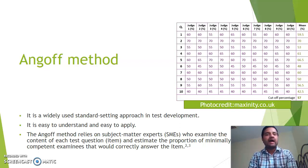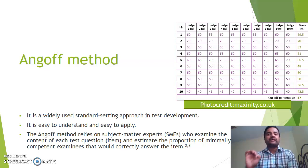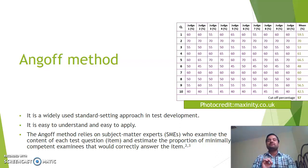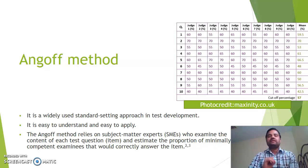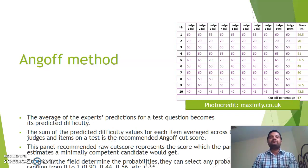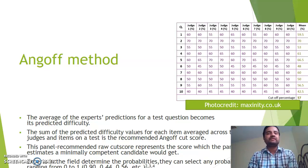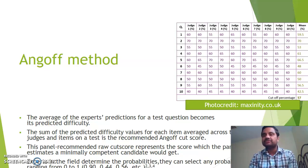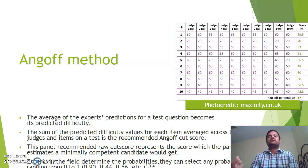It is easy to understand and easy to apply. It relies on subject matter experts — SMEs. They examine the content of each test question and estimate the proportion of minimally competent students that would correctly answer the item. The average of the experts' predictions for a test question becomes its predicted difficulty. The summation of those predicted difficulty values for each item, averaged across the judges and items on a test, is the recommended Angoff cut score.